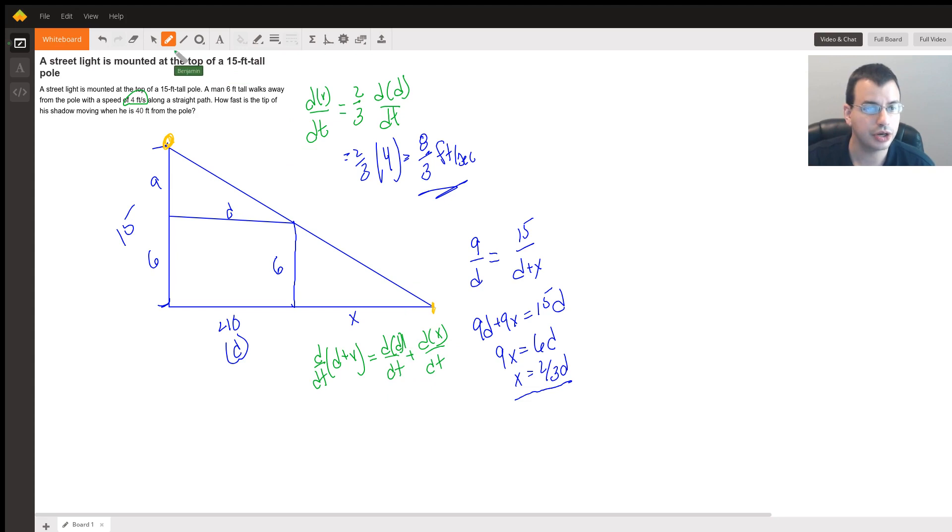So the first one, we're already given this one, this is four, and this one we found, eight-thirds. So we have four, which is the same as 12/3, I'm just going to do that so I can combine fractions, plus eight-thirds. And this gives us 20/3, 20/3 feet per second. So the man's shadow, this whole shadow right here.